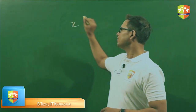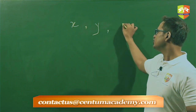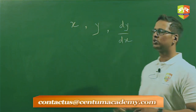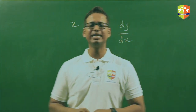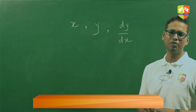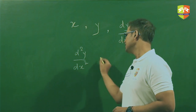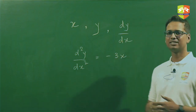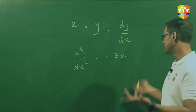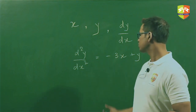A differential equation is basically an equation which involves the independent variable X, the dependent variable Y, and the differential of the dependent variable with respect to the independent variable, that is dy/dx. dy/dx can be in various orders. To give you an example, something like d²y/dx² = -3x — this is a differential equation, and we can have a Y term as well.